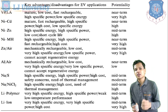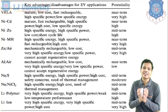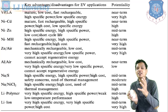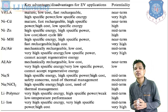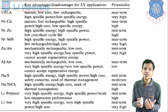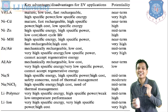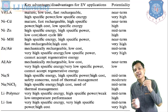You can also see here the comparison of batteries and their potential in the long term or near term. The first is VRLA, the valve-regulated lead-acid battery. Its advantages are: it is mature, has low cost, is fast rechargeable, and has high specific power. The disadvantage is low specific energy, meaning the range will be lower. In the near term, it has very high potentiality and can be further developed.